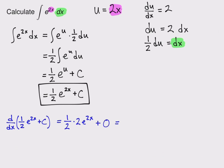And that involves bringing down a 2, and the constant C turns into a 0. And when I simplify that 1/2 and 2, I'm left with just e to the 2x, which is what I started with. And so that's a sign that I've done the right thing.